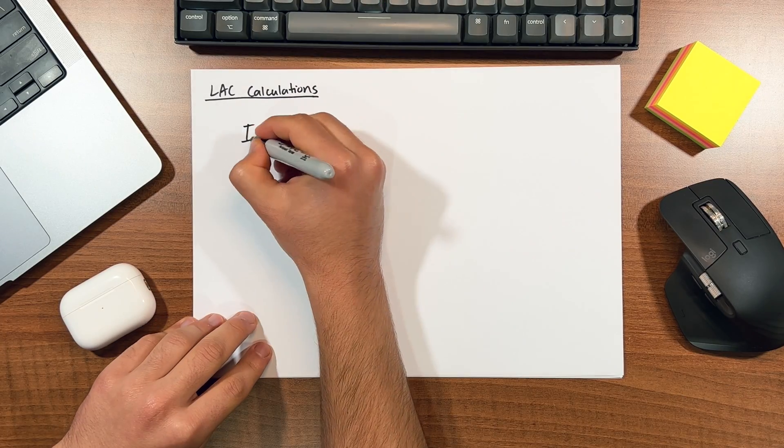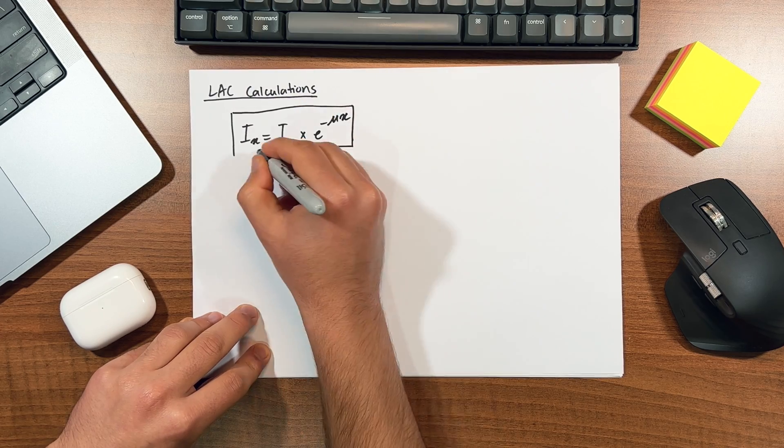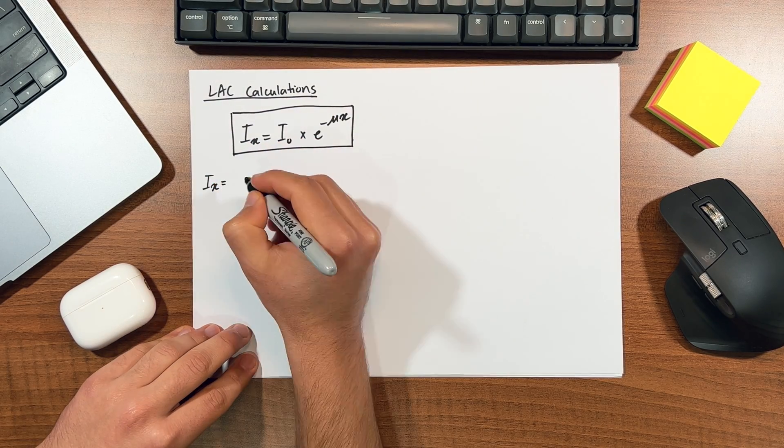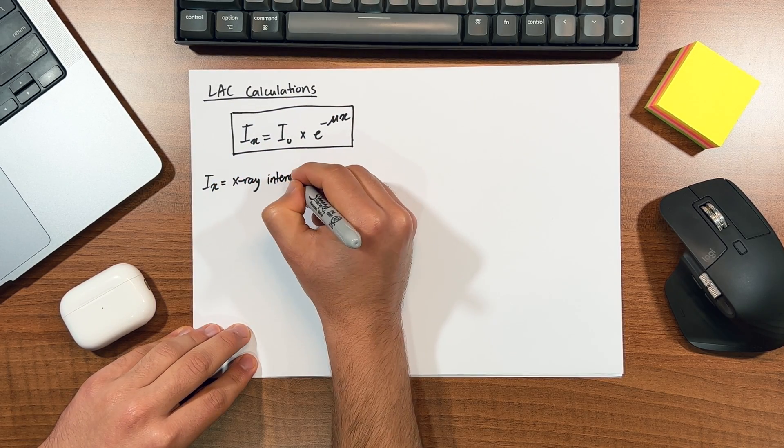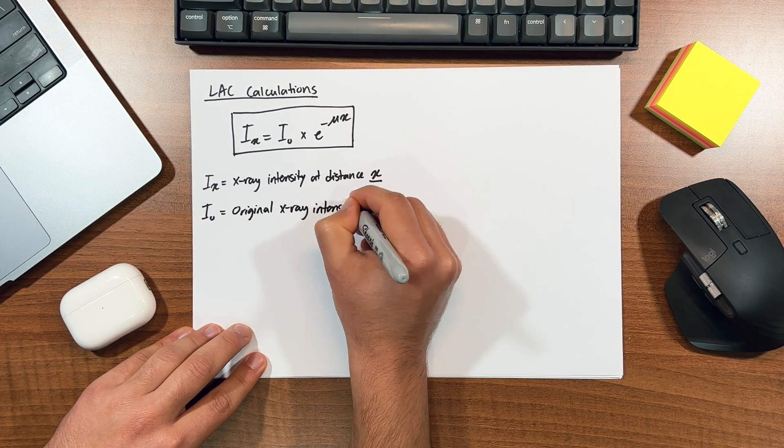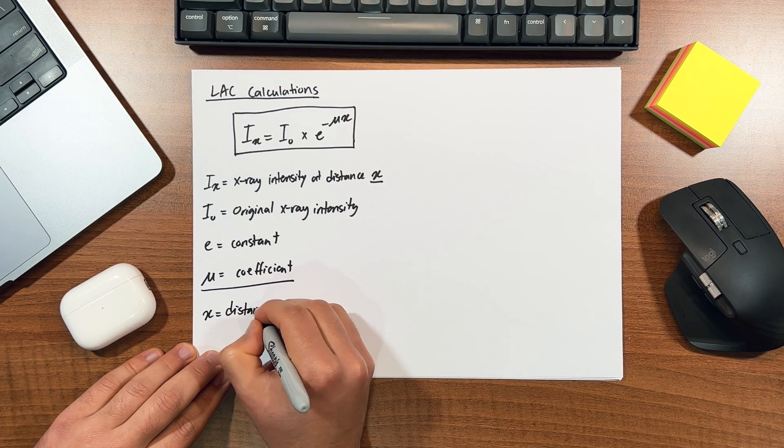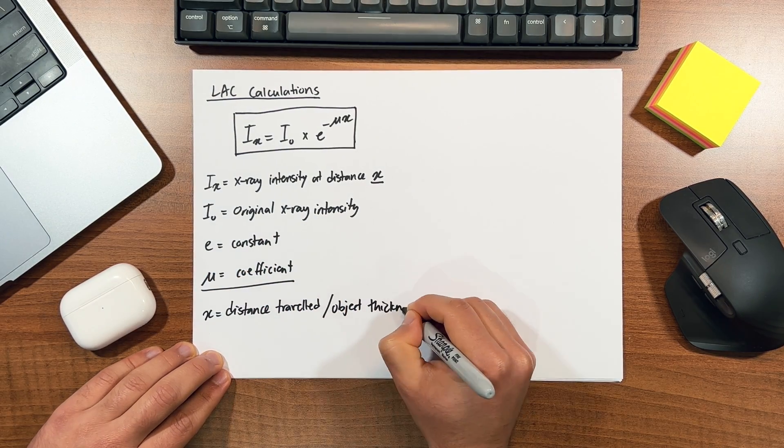Now let's look at how we can do some calculations with what we've learned so far. The intensity of a beam at distance x in a given material can be calculated with the following formula, where Ix is the intensity of the x-ray or any beam really after being transmitted across distance x, I0 is the intensity of the original beam, e is just the mathematical constant, mu is the coefficient we're looking for, and x is the distance travelled or the thickness of the object.